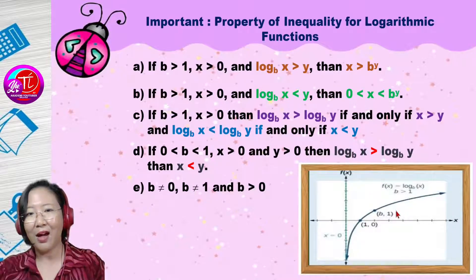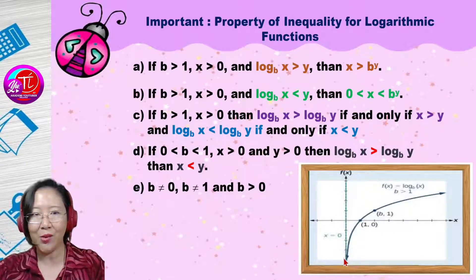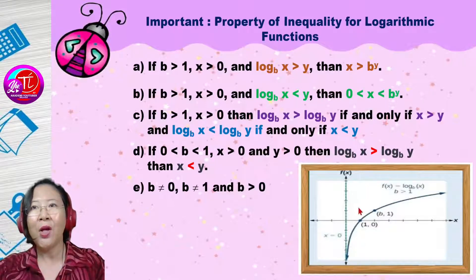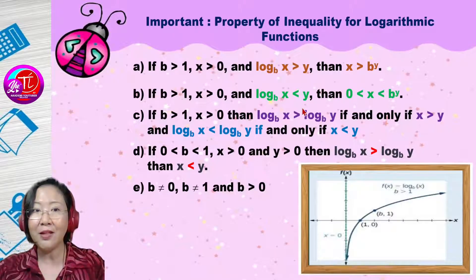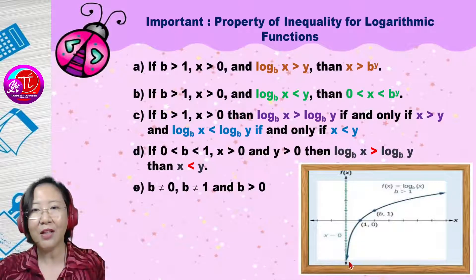For b bigger than one, looking at the graph, as the value of x increases the value of y also increases, and as x decreases y also decreases — so the inequality symbol basically follows. If you remember your logarithm graph, it looks like this. For the case where the log value is less than zero, it goes from zero until b to the power of x, because the graph has an asymptote at x equals zero — the graph will never touch or go beyond x less than zero.